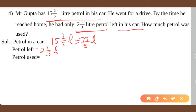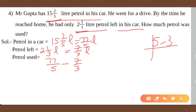It is clear that this is a subtraction problem. Petrol filled was 15 and 2 by 5 liters, equal to 77 by 5 liters. Petrol remaining was 2 and 1 by 3 liters, meaning 7 by 3 liters. So petrol used is 77 upon 5 minus 7 by 3. LCM of 5 and 3 — both prime numbers — is 15.